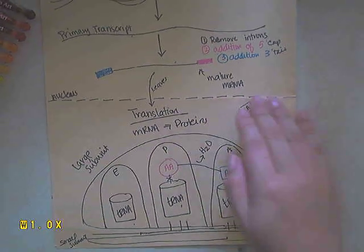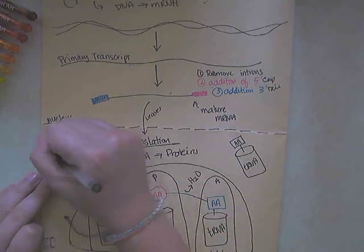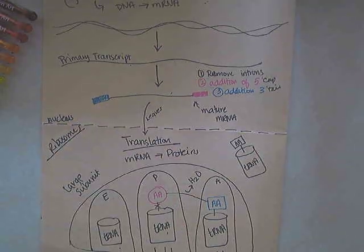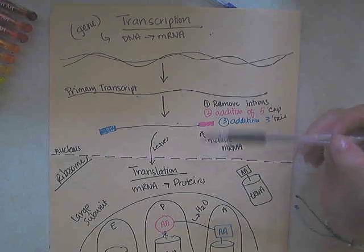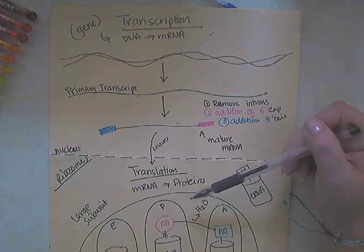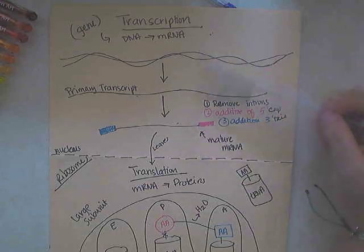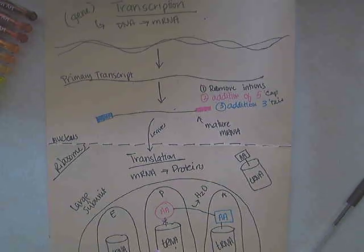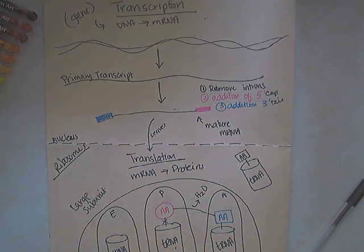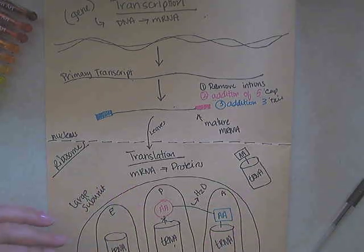The separation of these two events is in eukaryotic cells only because there's a nucleus. Translation takes place on the ribosomes, which can either be free-floating or attached to the rough ER, whereas transcription takes place in the nucleus. If this were a prokaryotic cell, transcription would take place at the same time as translation, and there would also be no processing of the mRNA itself — it wouldn't need to be edited because prokaryotic cells do not have those introns.